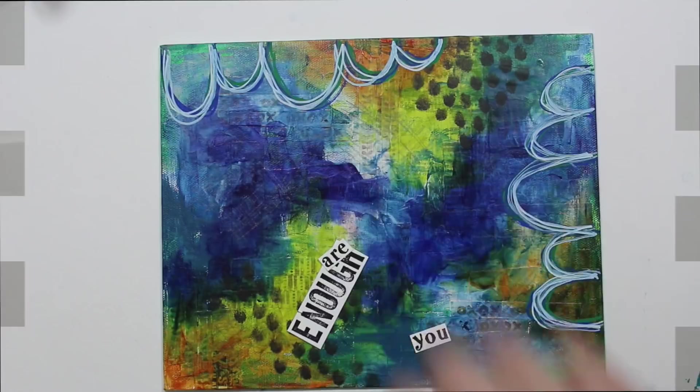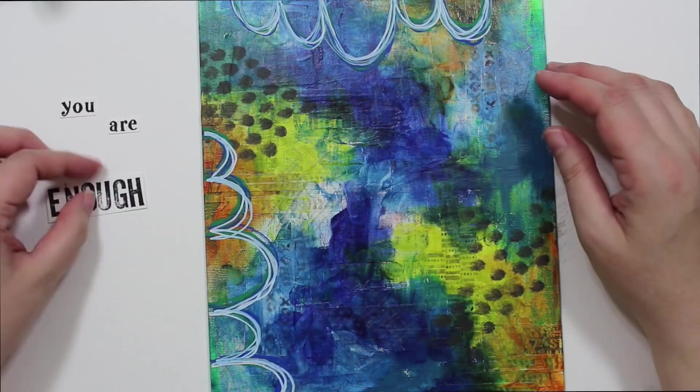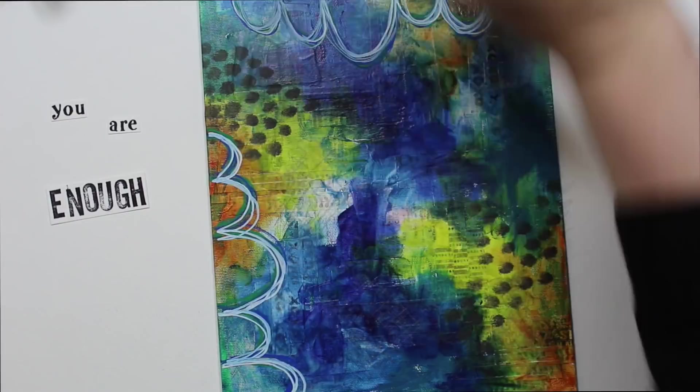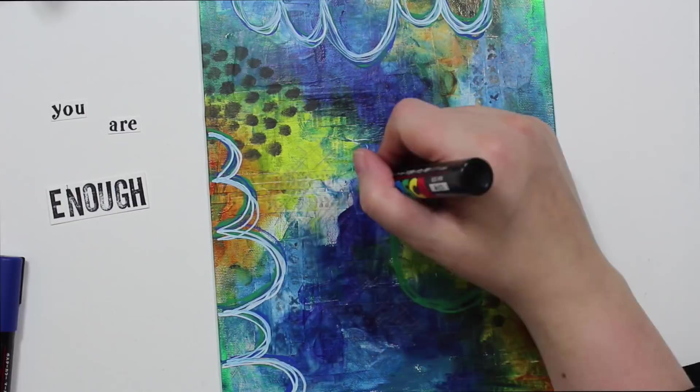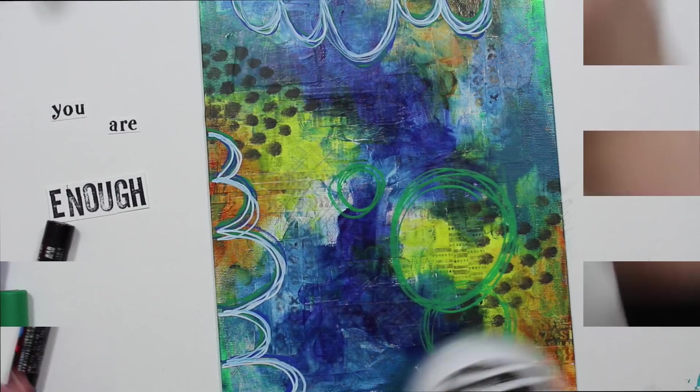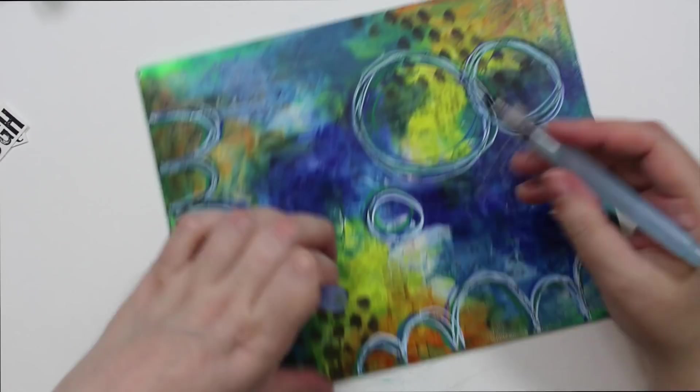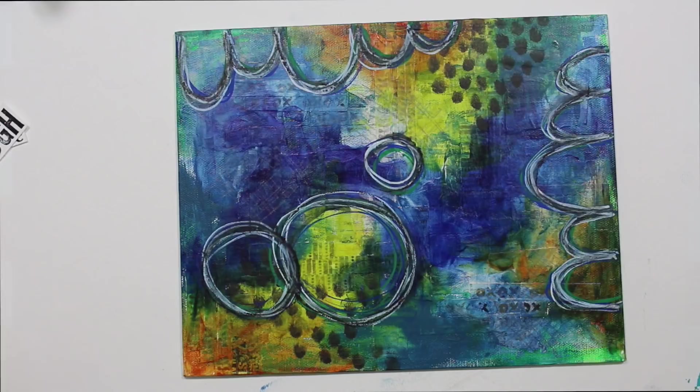Now I just need to decide where I want to put these. You are enough. It feels like it's just missing something. Circle of course, because circle is what I do. I'm going to take my Stabilo pencil. You know, I always do better if I just listen to my gut. Like that. And let's dry these thoroughly so I don't mix my paints. That kind of darkened it back up again, which I like. Now I feel like I'm ready to do my polka dots.